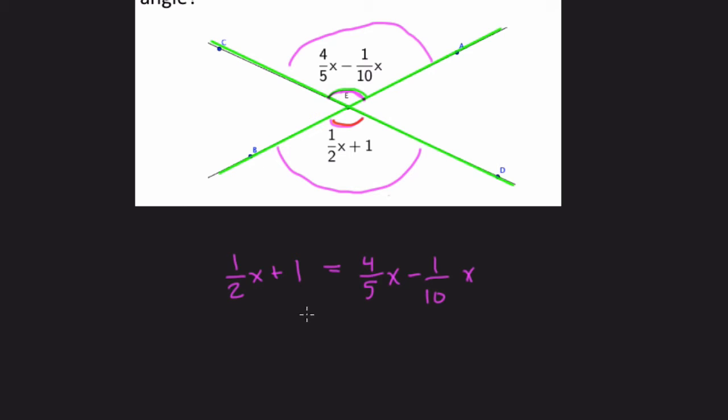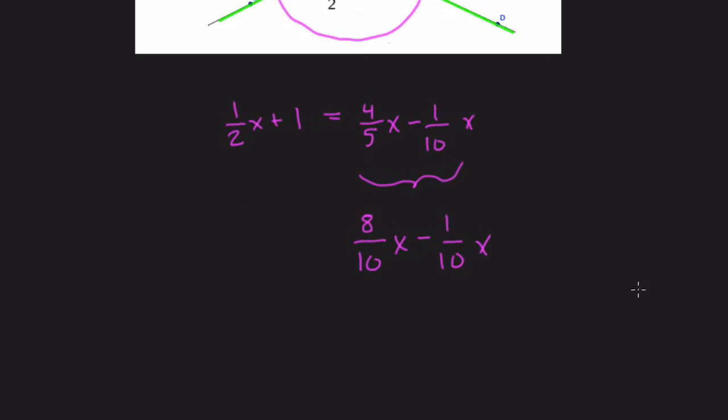So here what I would do is start by combining like terms, 4 fifths X. I take 4 fifths and double 4 to 8 and 5 to 10 because that's an equivalent fraction, and now I can quickly subtract. 8 tenths minus 1 tenth, so both in terms of tenths, so now I can solve. 8 tenths, take 1 tenth away, that's 7 tenths. So we have 7 tenths X equals 1 half X plus 1.